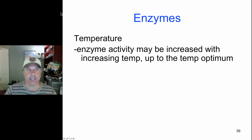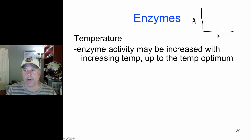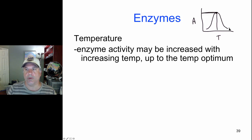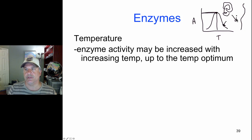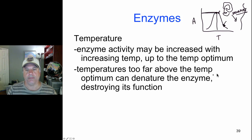Most enzymes have a catalytic optimal temperature. If you plot activity versus temperature, most proteins have an optimum temperature at which their activity is maximized — anything above or below that affects the enzyme. At very high temperatures you can denature a protein — unfolding a protein is called denaturing — by breaking all the hydrogen bonds and salt bridges. Even at temperatures slightly above the optimum, enzyme activity is lowered. There is usually a temperature optimum for enzymes.